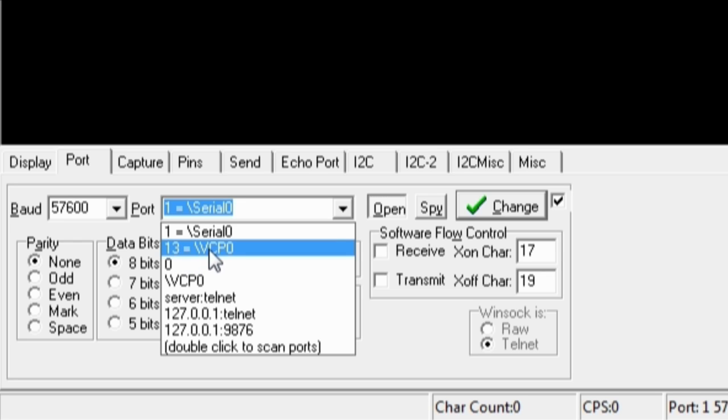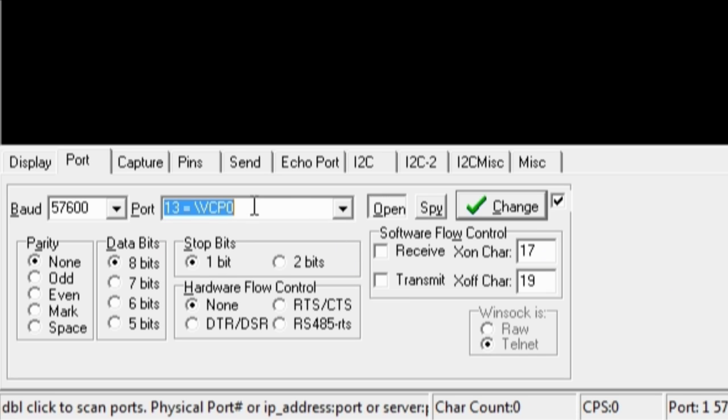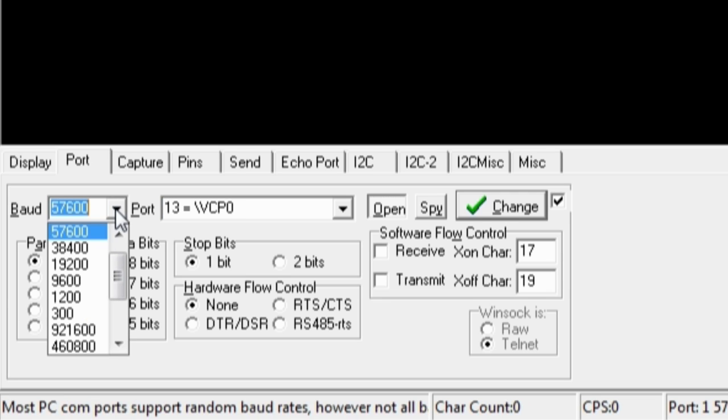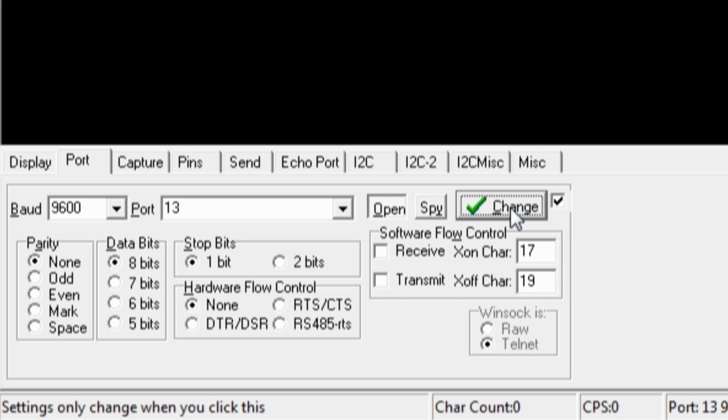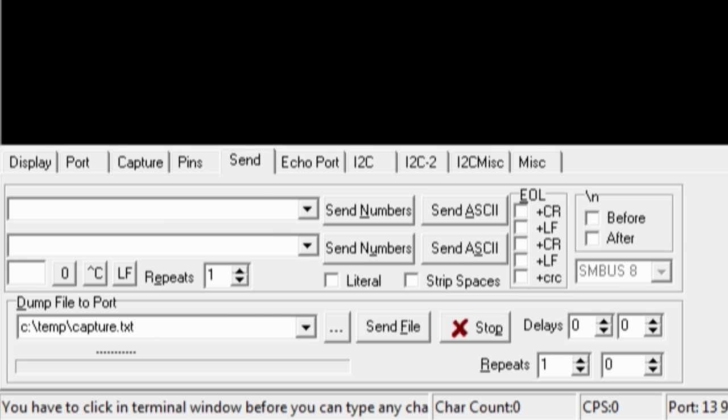The FTDI was recognized as serial port 13. No hardware flow control, one stop bit, eight data bits and 9600 baud, this is the default setting you can change this later. Then we press change and we can start sending to the HM-10.